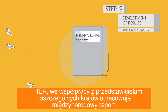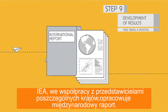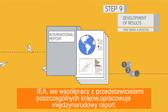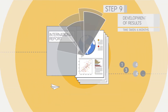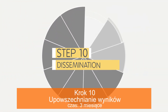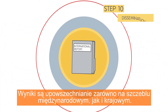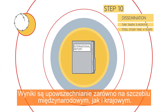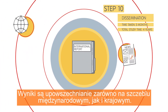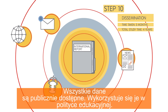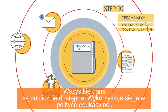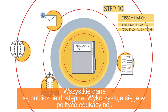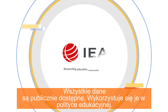An international report is developed in collaboration with the representatives from each education system. Results are released and disseminated. All data are made publicly available and used by policy makers and researchers across the globe to improve learning for all.